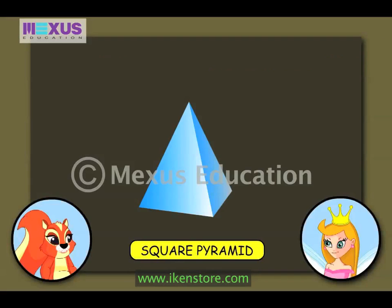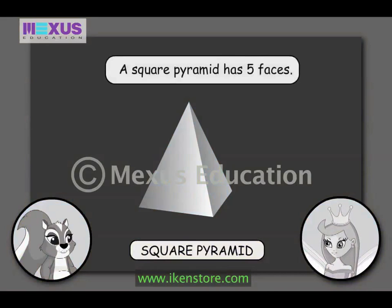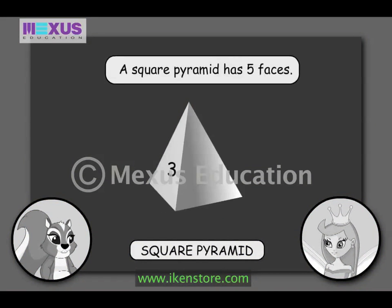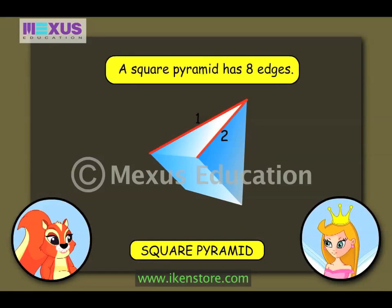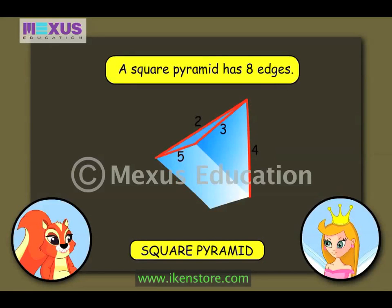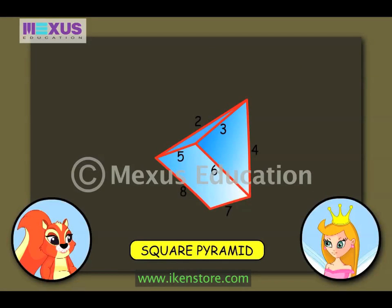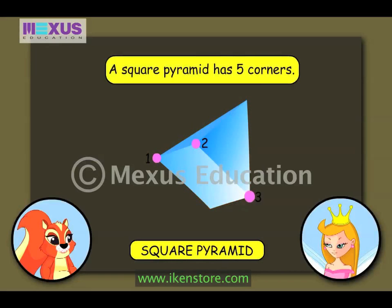The fifth solid shape is a square pyramid. A square pyramid has 5 faces — 4 on the sides and one at the bottom — 8 edges and 5 corners.